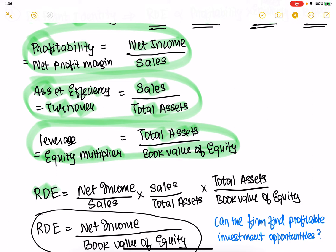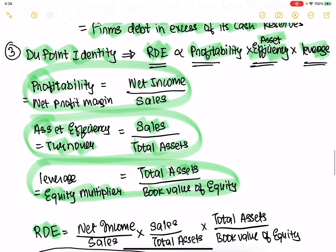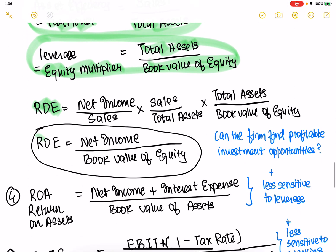ROE — return on equity — is basically: if you multiply the three components of profitability, asset efficiency, and leverage, you get ROE as net income over book value of equity. This is a really important measure: return on equity basically says how much is this company making, is it profitable, and are they able to find profitable investment opportunities?